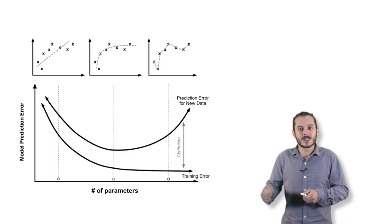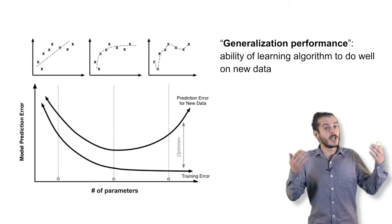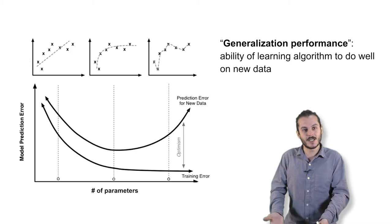On the other hand, the generalization performance, which is what we actually care about, will tend to first improve as we make the model more complicated, and at a certain point it will start declining again. That is the point at which the model starts overfitting and just memorizing the data set instead of learning to generalize.